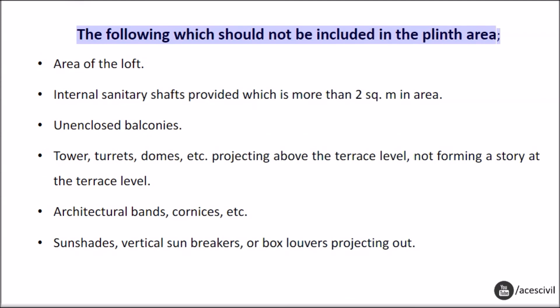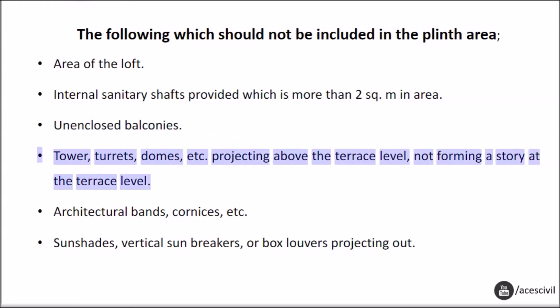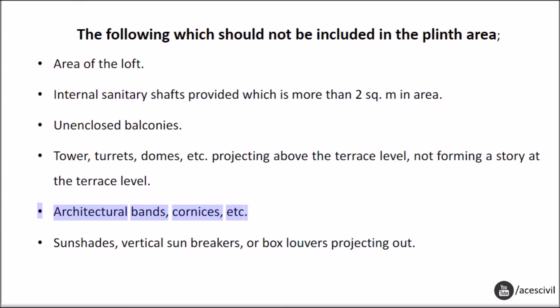The following should not be included in plinth area: area of the loft, internal sanitary shafts more than 2 sq.m in area, unenclosed balconies, towers, turrets, domes, etc. projecting above the terrace level, architectural bands, cornices, etc., and sun shades, vertical sun breakers, or box louvers projecting out.